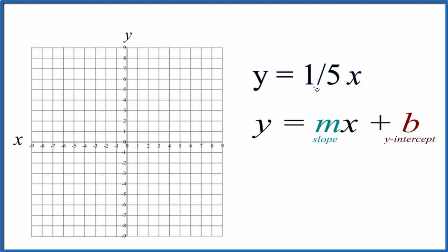So we start at y equals mx plus b, but we don't have b, so we can just say b is 0, so the y-intercept is 0. That's where we cross the y-axis, right here at 0. So that's our first point.